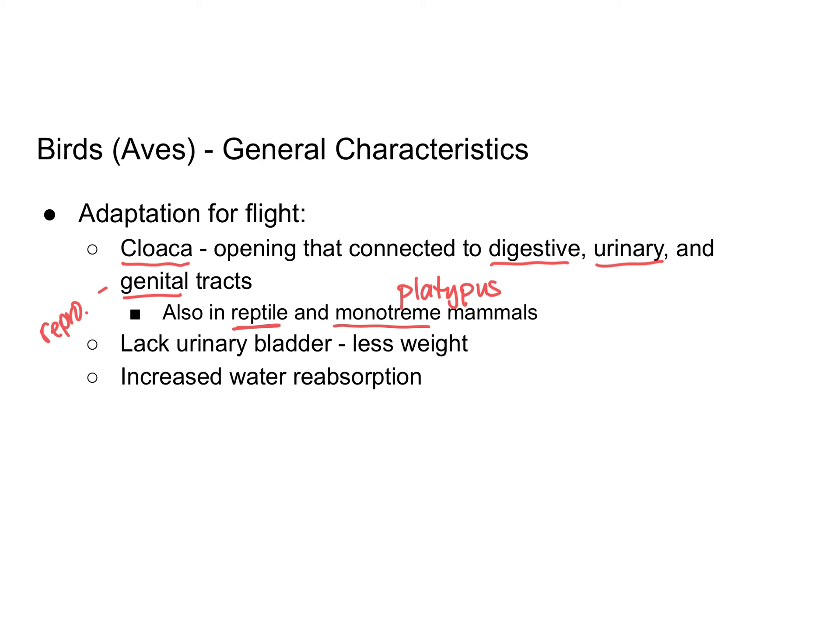Because of this, birds do not have a urinary bladder. Unlike humans, who store urine in a bladder until they find a place to empty it, birds can't hold onto waste. This is one reason why birds excrete so frequently — what comes out is actually a mix of feces, urine, and other waste combined. This also helps reduce weight, since birds need to fly efficiently, and the less weight they carry, the more efficiently they can fly.